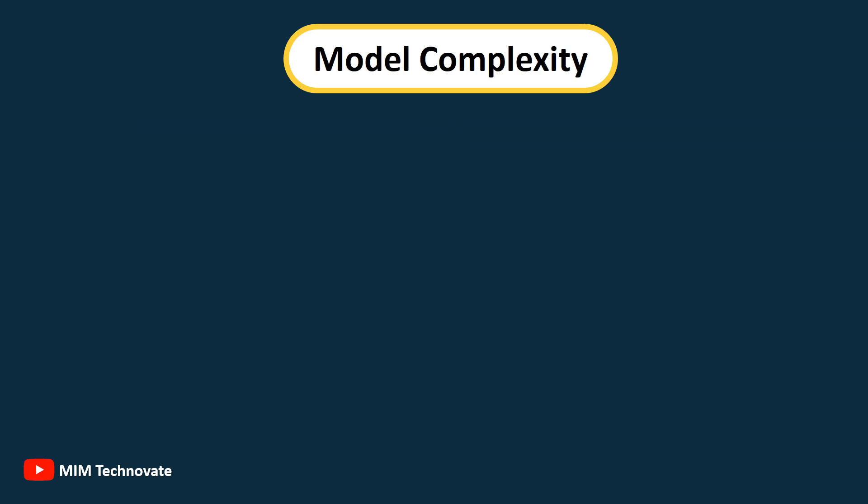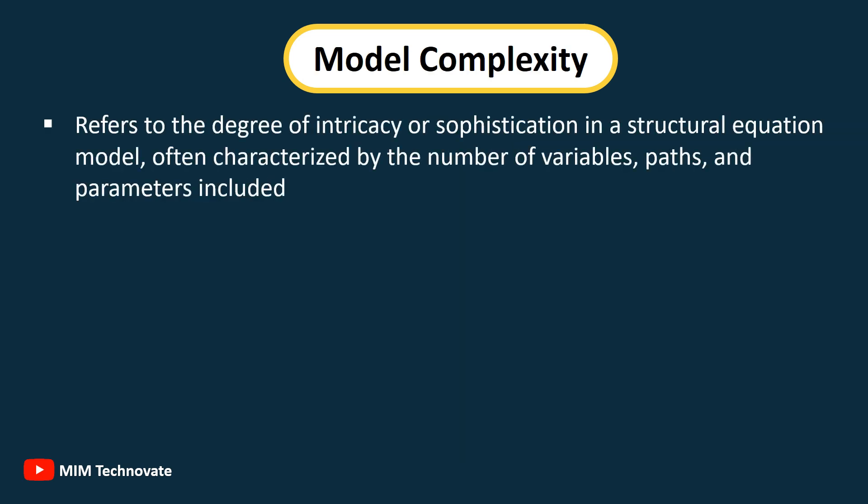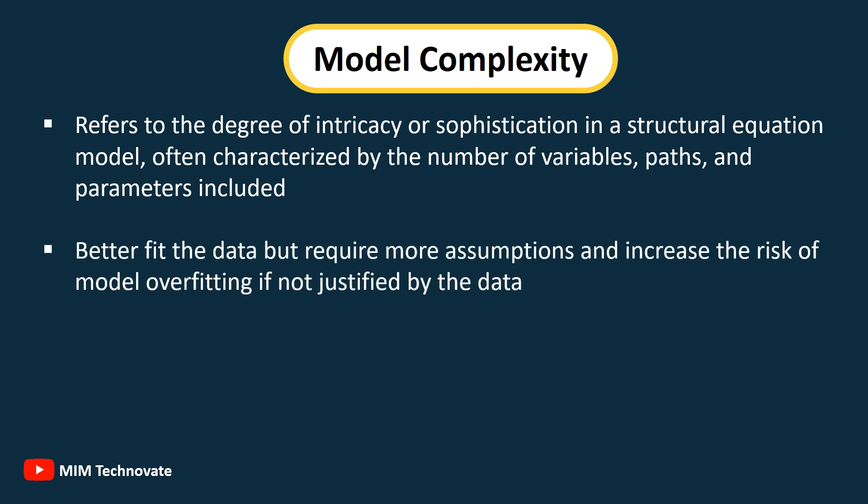Model Complexity: Refers to the degree of sophistication in a structural equation model, often characterized by the number of variables, paths, and parameters included. Complex models may better fit the data but require more assumptions and increase the risk of model overfitting if not justified by the data.